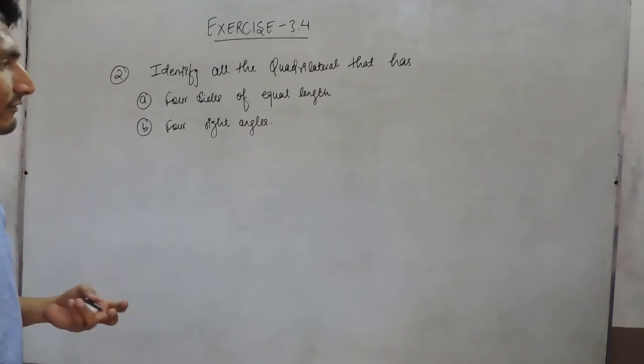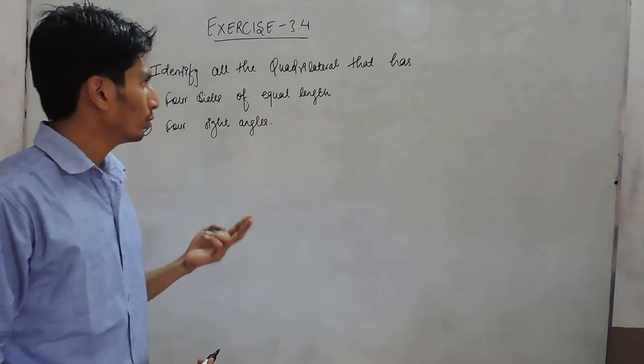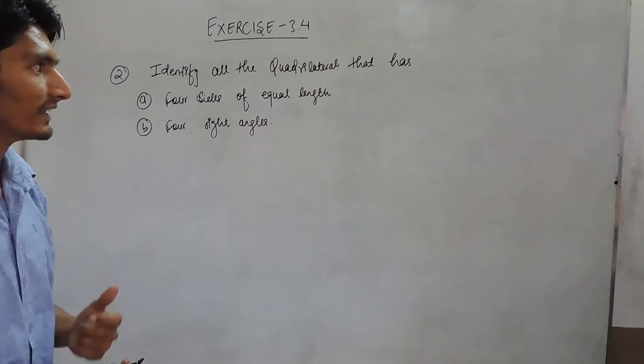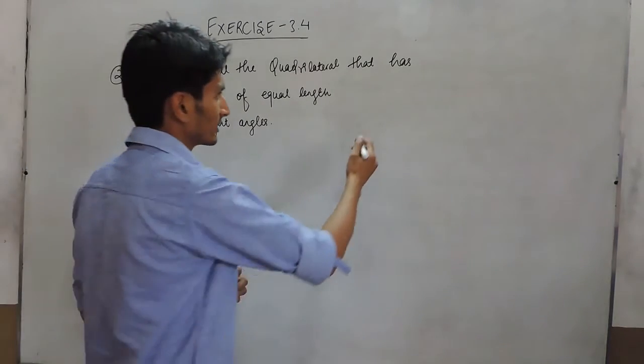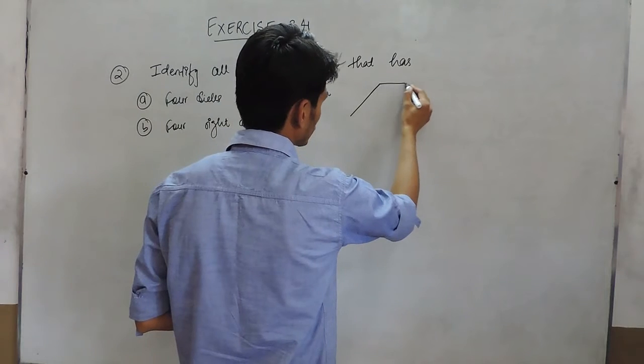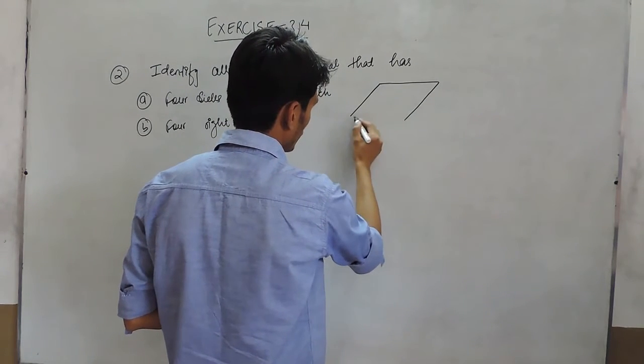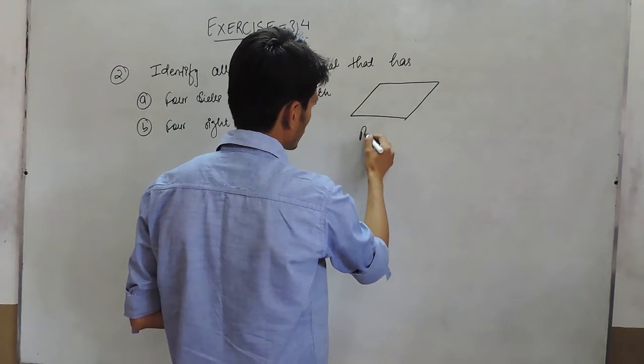We know that we have two such quadrilaterals whose all four sides are equal in length. First is a rhombus.